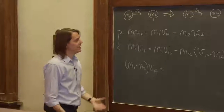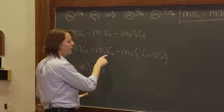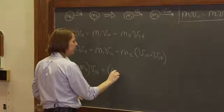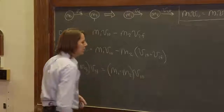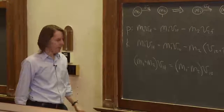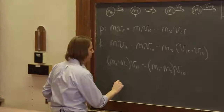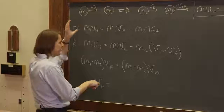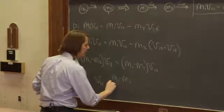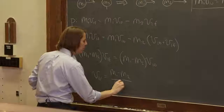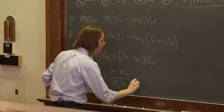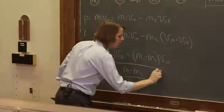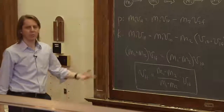Now we've isolated v1f. Looking at what's left, we have m1·v1_initial minus m2·v1_initial, which factors as (m1 - m2)·v1_initial. Dividing through gives us the equation: v1f = (m1 - m2)/(m1 + m2) · v1_initial. This is one of the equations worth committing to memory — the final velocity of the initially moving mass m1 is the difference in masses over the sum of masses, times its initial velocity.